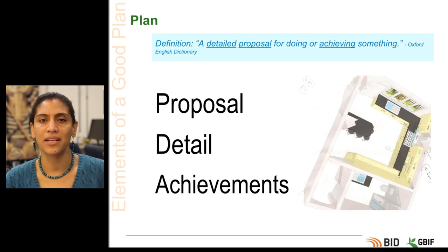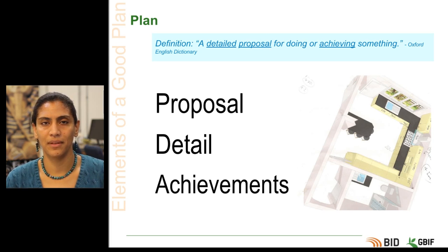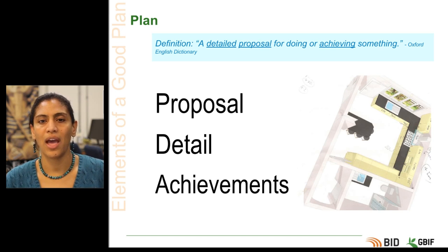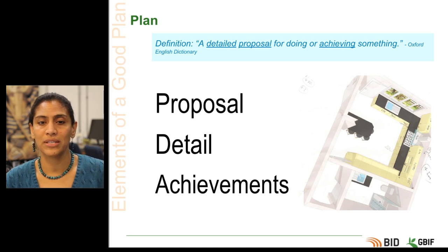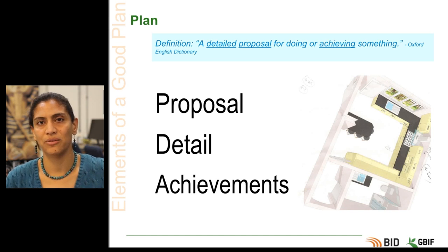A plan is a detailed proposal for doing or achieving something. The important words for us in this are detail, proposal and achievement. In order for your team to perform effectively, they need to know what they are doing and when they need to do it. So you need to be able to articulate the details of your plan to them. We discussed previously the importance of documentation and also looked at the elements required to create a workflow. Here we will see how to translate those into a well-constructed practical planning document.